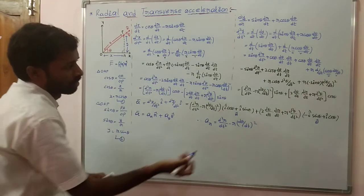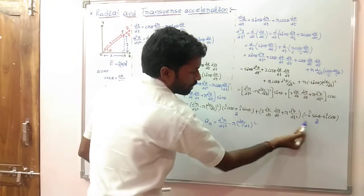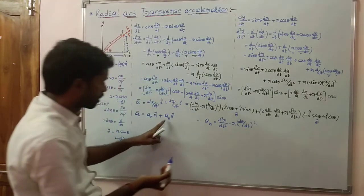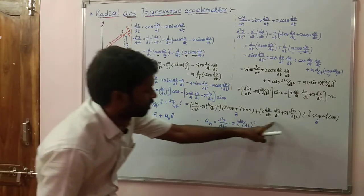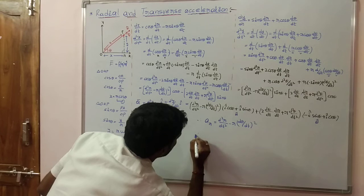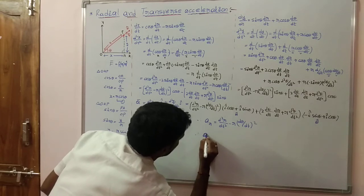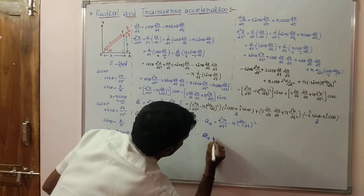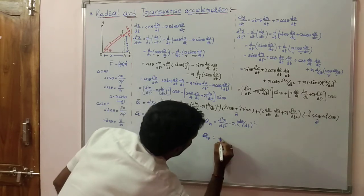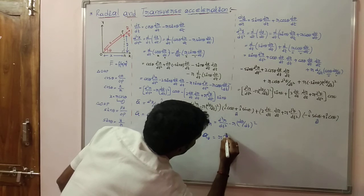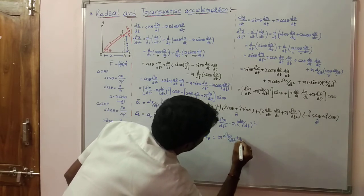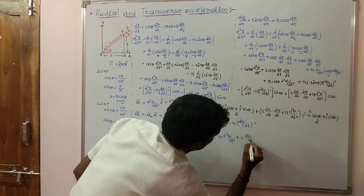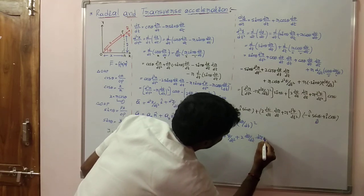And the coefficient of theta-cap represents transverse acceleration. Therefore, transverse acceleration a_theta is equal to r into d²theta/dt² plus 2 into d theta/dt into dr/dt.